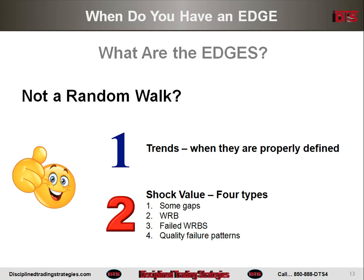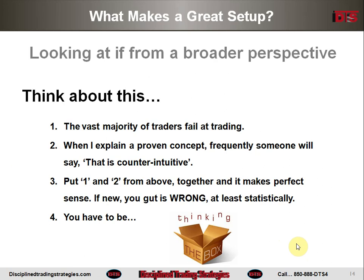The other time when you have an edge is when there is no trend, or if something ends the trend through shock value. Shock value is when something — boom — unpredicted, not built into the chart, suddenly happens. Types of shock value: some gaps create shock value and are the best because they have the best trappage. Some wide range bars (WRBs) create shock value. Failures of wide range bars create shock values — an inequality failure pattern — and any time a great setup completely fails on a confirmed basis. All of these create great edges or great patterns to trade. If you're a good trader, whatever you're doing is one of these things. If not, you could be trading random noise.